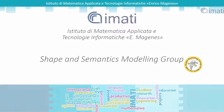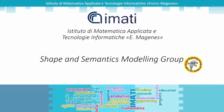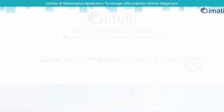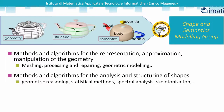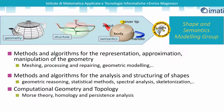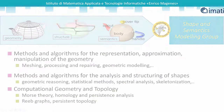Welcome to the Shape and Semantics Modeling Group at IMATICNR. The Institute of Applied Mathematics and Information Technologies is one of 88 institutes of the Italian National Research Council. The Shape and Semantics Modeling Group deals with geometry processing with mathematical and topological approaches, considering shape as a set of geometric, structural and semantic aspects.